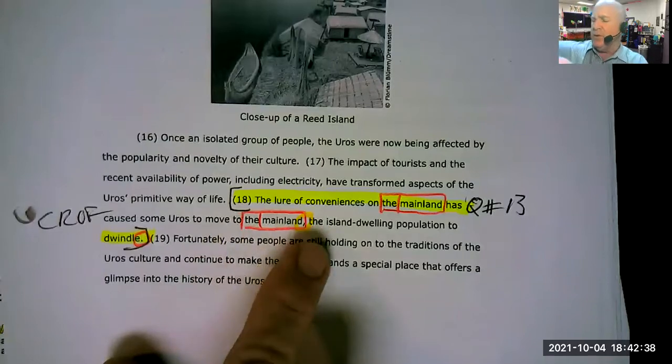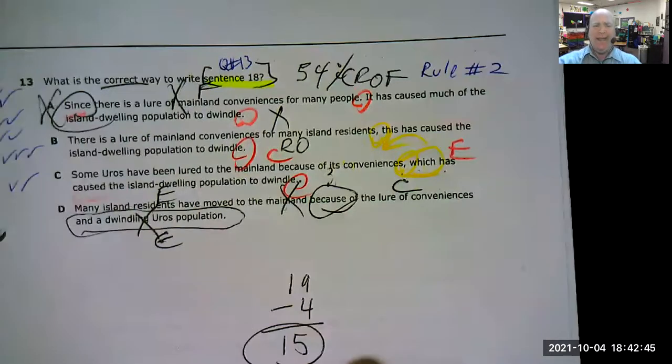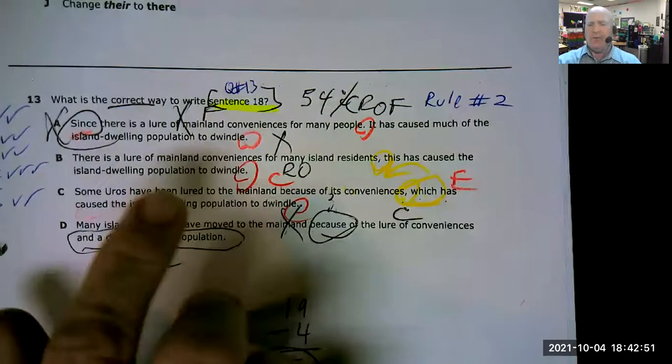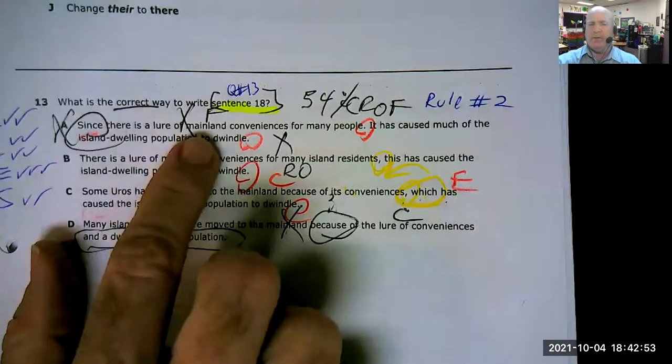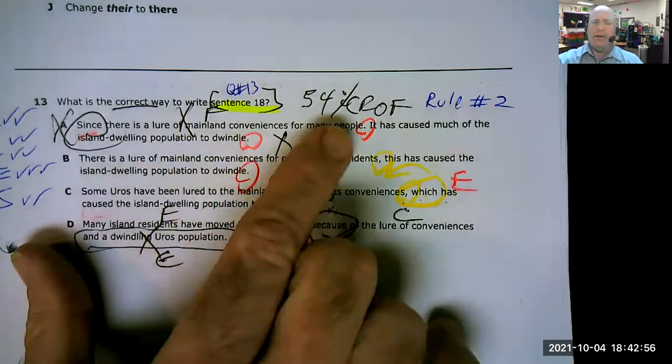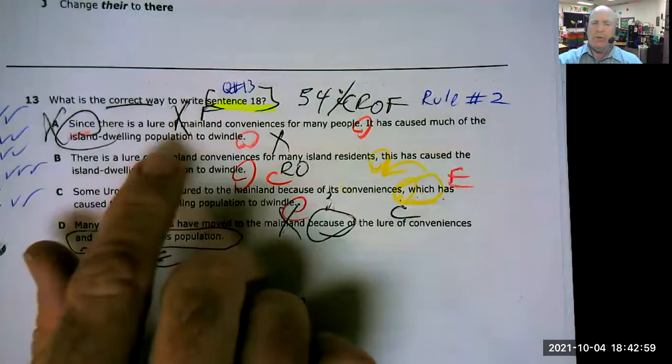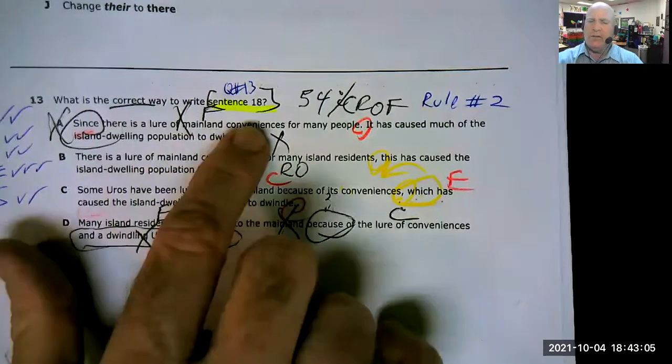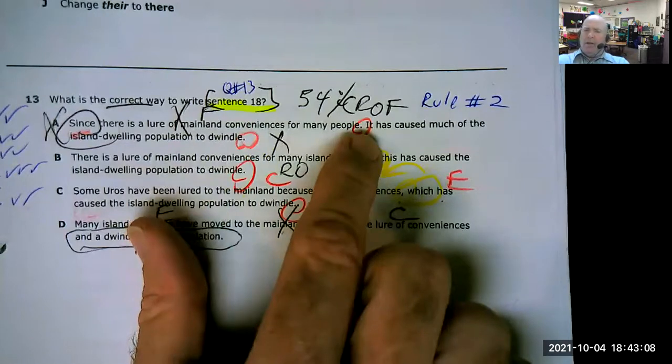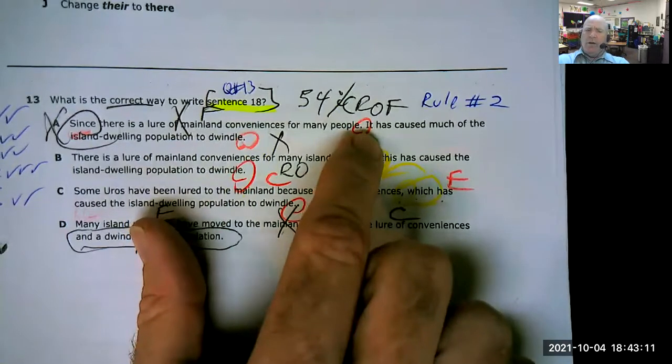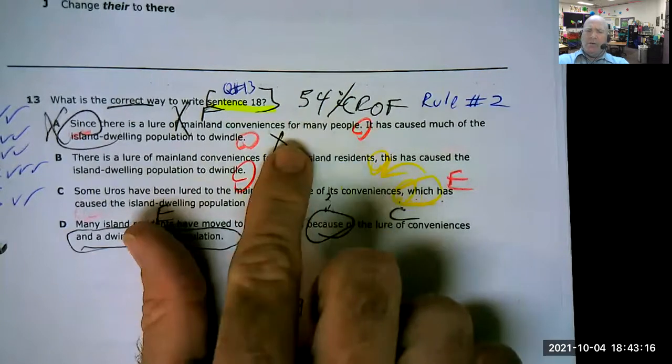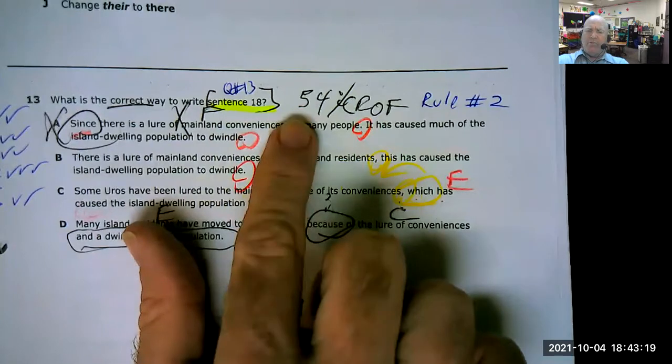So I would need something that allows a cause and effect, not a comma there. I would need to get rid of the repetition to move there. And the island population to dwindle could be an answer. But let's go ahead and take a look at the ones that they gave us. Because this year we will get multiple choice. Letter A. Capital. Since there is a lure of mainland conveniences for many people period. Since I started with the word since, that was going to be a dependent clause.